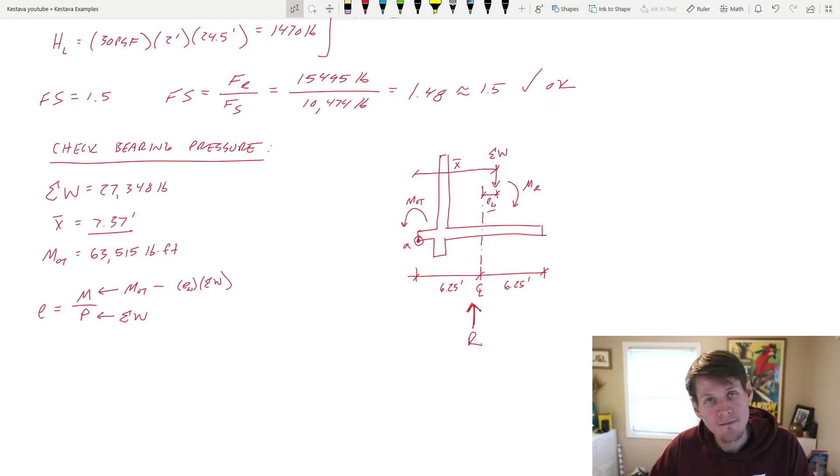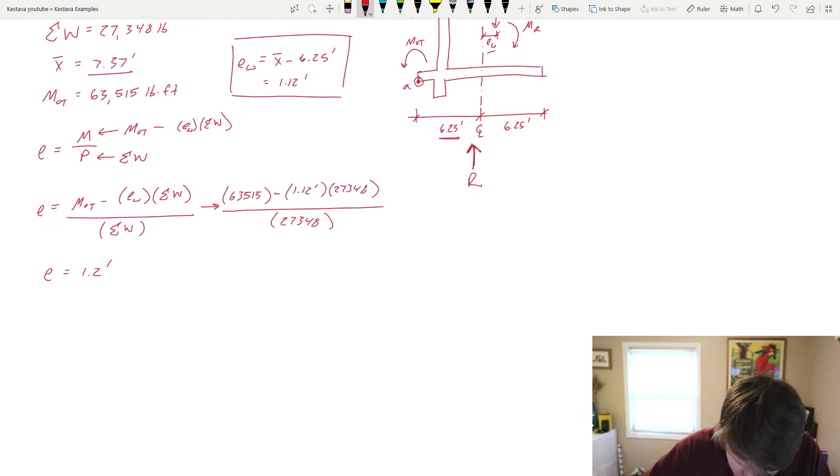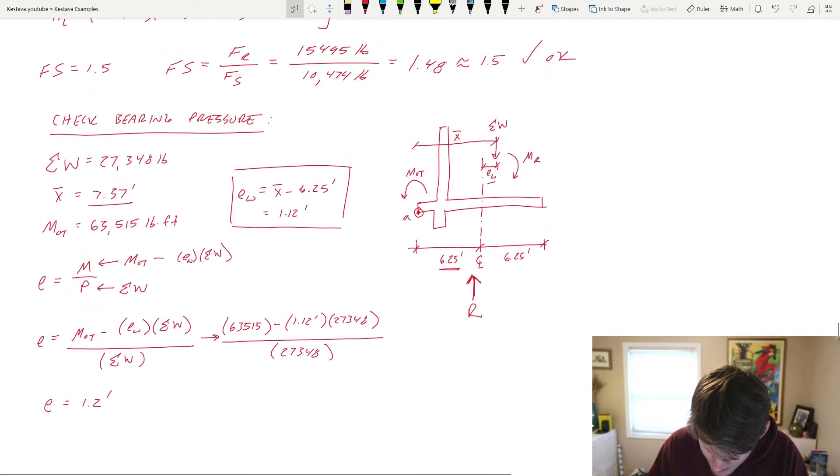And there we have it. E_W is just X bar minus one half of the length of your base, and that gets you 1.12 feet. All that plugged in spits out the following, 1.2 feet. That E is equal to, you know what, I'm going to go green dash here.